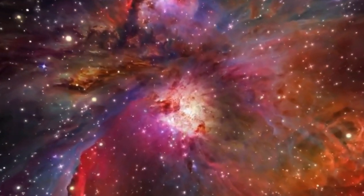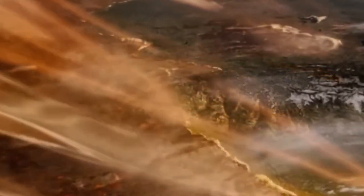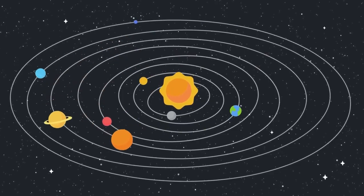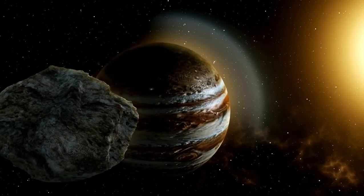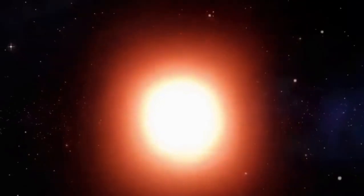This staggering magnitude not only underscores Betelgeuse's physical enormity but also signifies its evolutionary phase in the stellar life cycle. As a red supergiant, Betelgeuse finds itself nearing the denouement of its existence, a phase characterized by its expansion in size and cooling, following eons of catalyzing hydrogen into helium at its core. Estimated to be between 8 to 8.5 million years old, it stands as a venerable entity in the cosmic chronicle of stars, transitioning from a scorching, azure-hued orb to the sprawling crimson giant that graces our skies today.